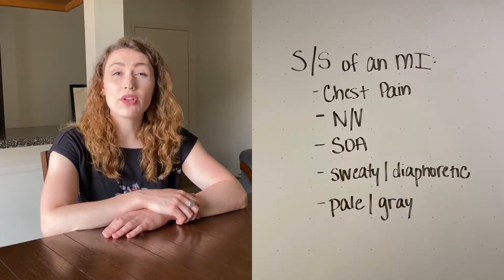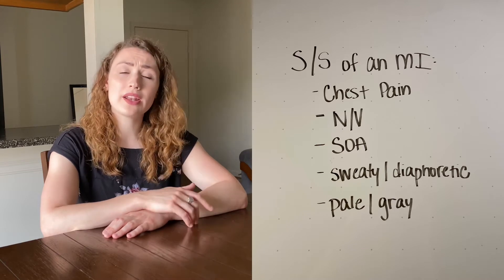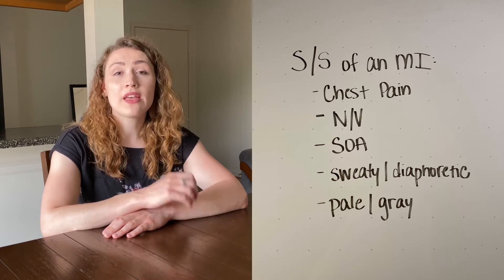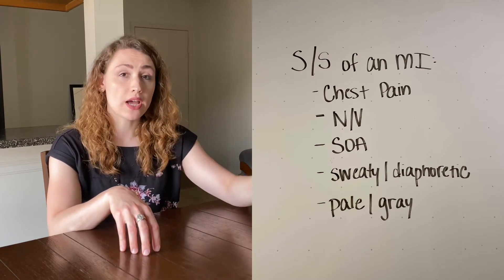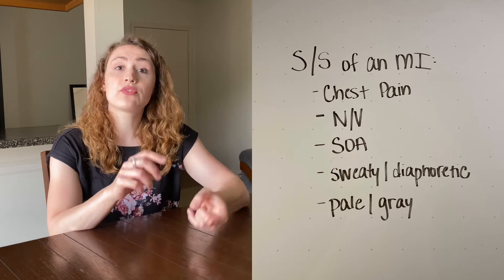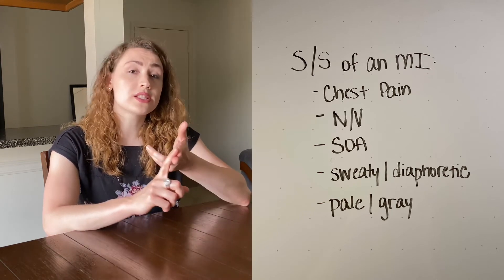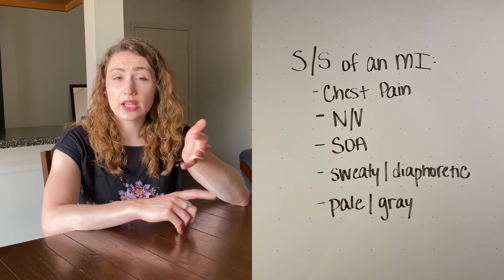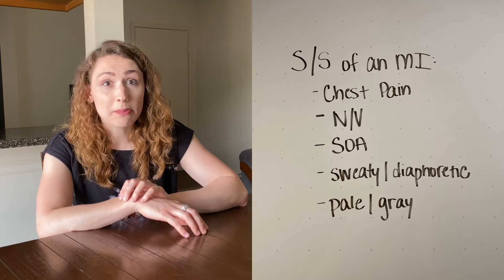What are the signs and symptoms that somebody is having an MI? The hallmark sign is chest pain, but there are other signs and symptoms that can accompany chest pain or stand on their own and still signal an MI even without chest pain. Those include nausea and vomiting, shortness of breath, sweating or diaphoresis, and being pale or gray — and if they're gray, that's a really bad sign.